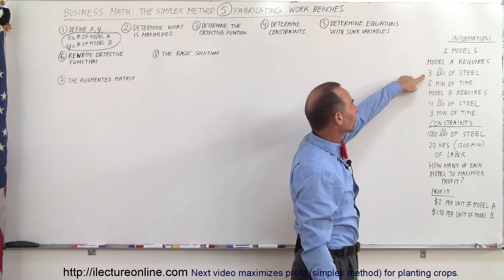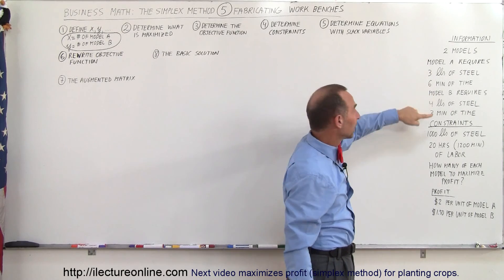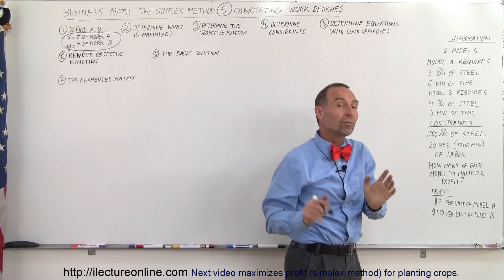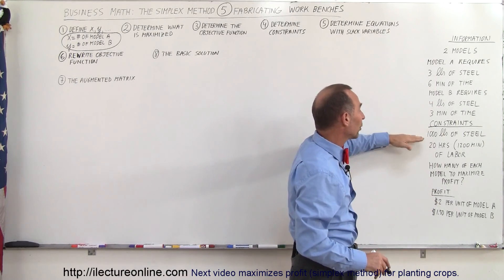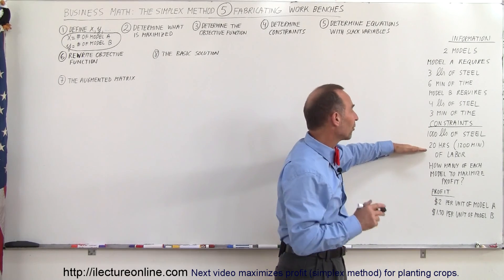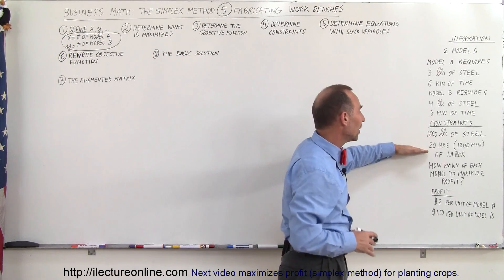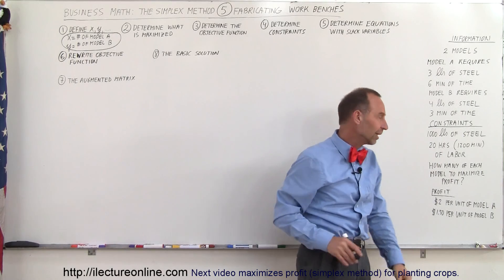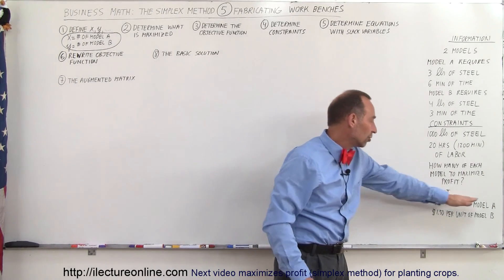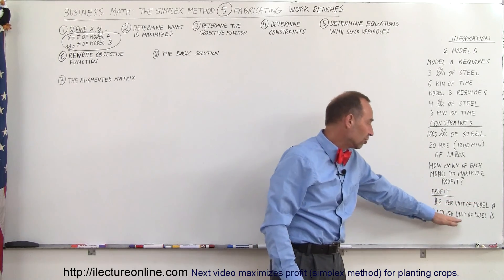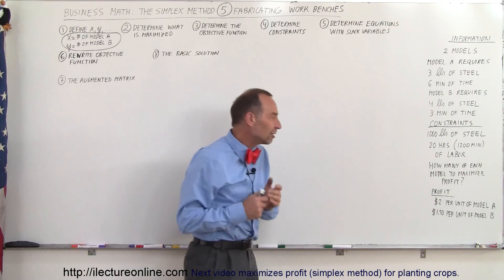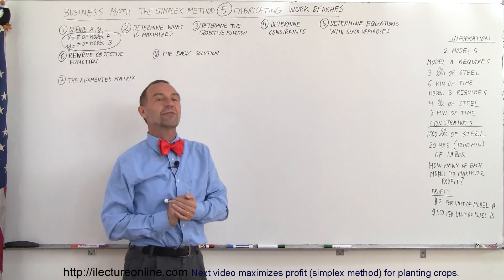Model A requires three pounds of steel and six minutes of labor. Model B requires four pounds of steel and three minutes of labor. The constraints are that we only have a thousand pounds of steel to use every day and only 20 hours of labor, which is 1,200 minutes. The profit is two dollars for each unit of A and a dollar fifty for each unit of B, and we want to find how many of each model to make to maximize profit.